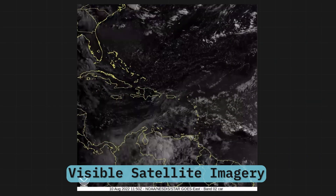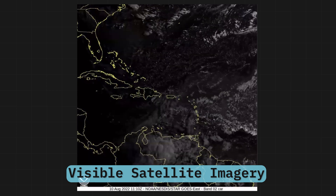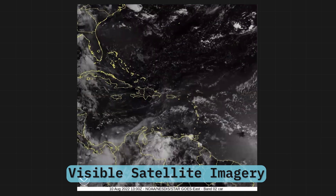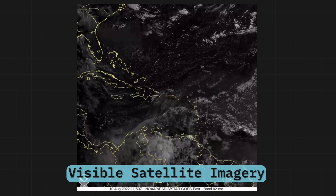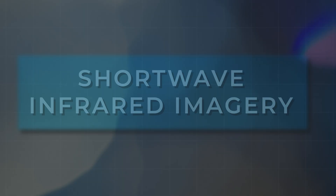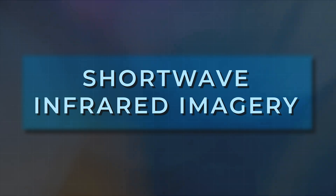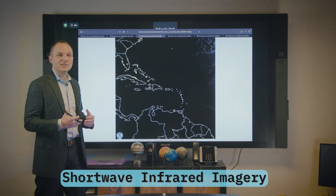If we go to one of the channels that make up the geocolor, this is the visible satellite imagery. You can already start to see some of the issues with just visible alone — while visible has a higher resolution, which allows you to see much smaller features, it doesn't work when the sun is not up. What you see here is the terminator moving across. For visible to work, it is actually seeing light that is reflecting off the clouds and coming back to the satellite.